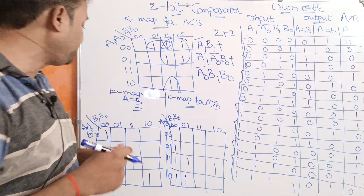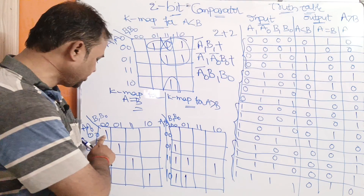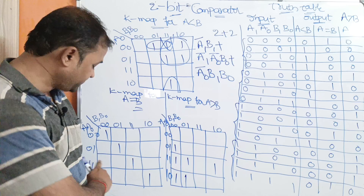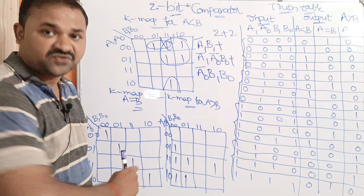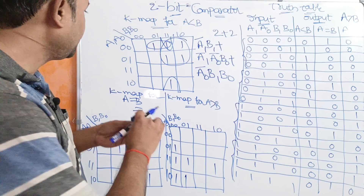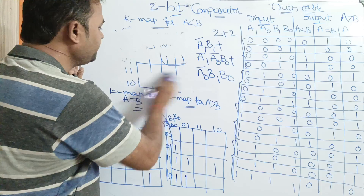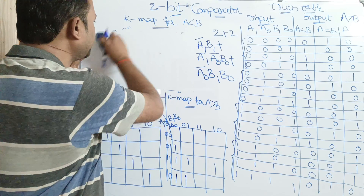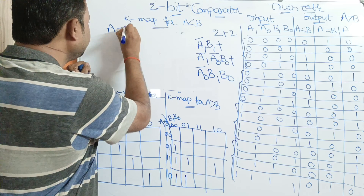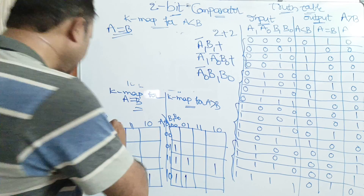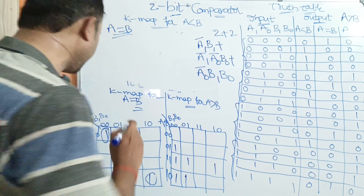Now let us see the expression for A equal to B. A equal to B output is 1 when the combinations are: 0,0,0,0; then 0,1,0,1; then 1,1,1,1; and 1,0,1,0. We now simplify this expression using the Karnaugh map. Each of these four combinations forms its own group.